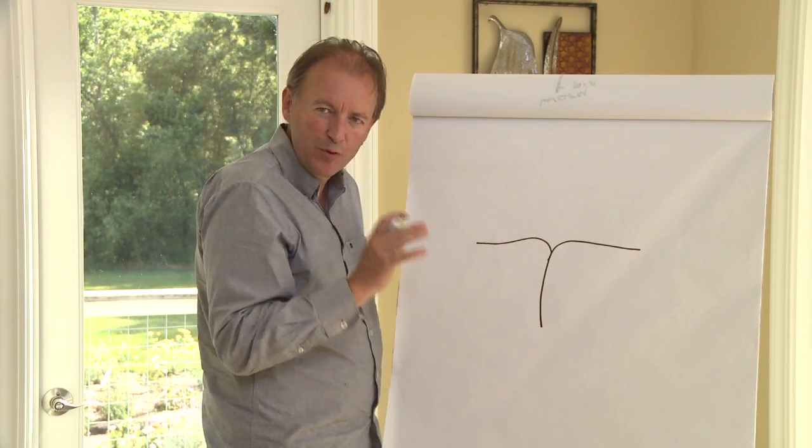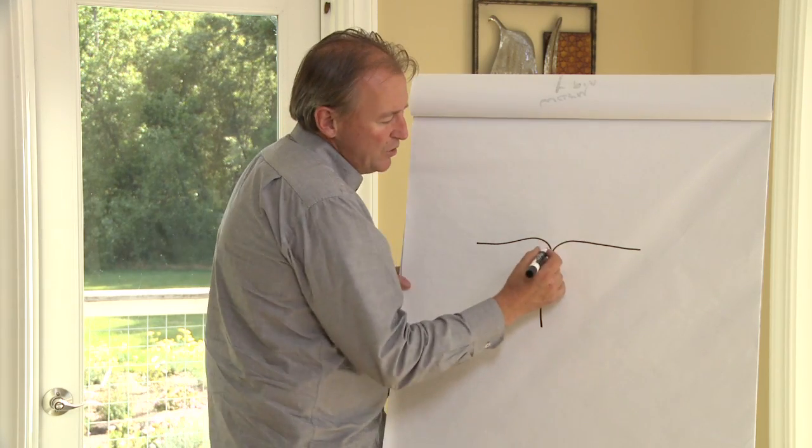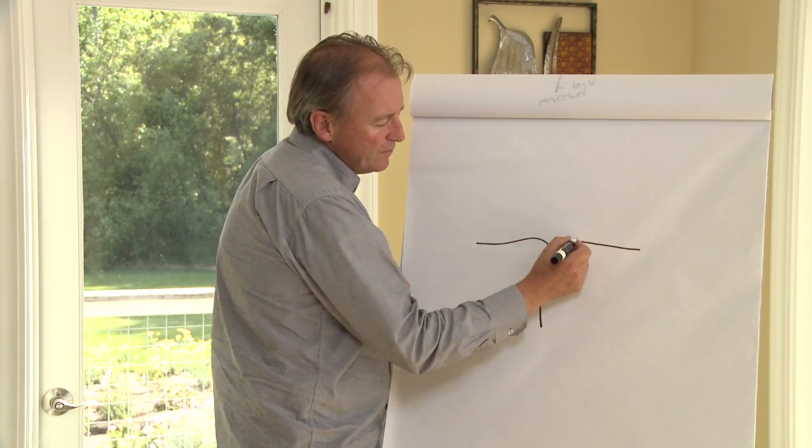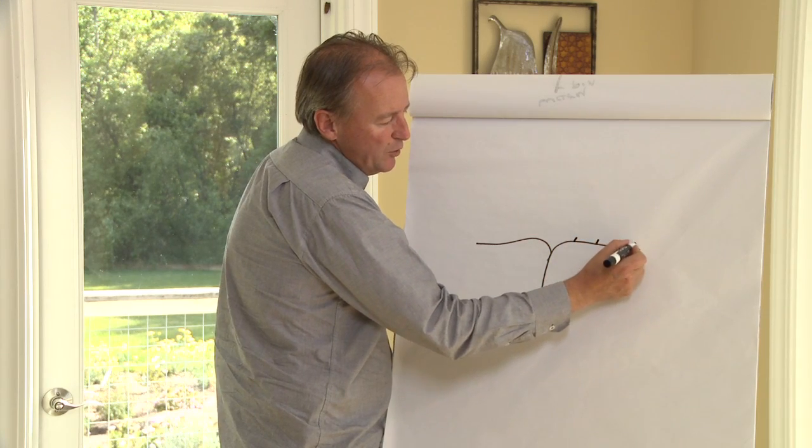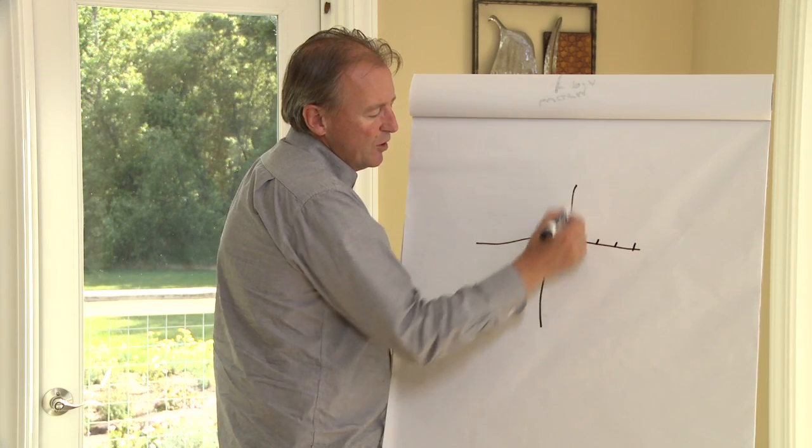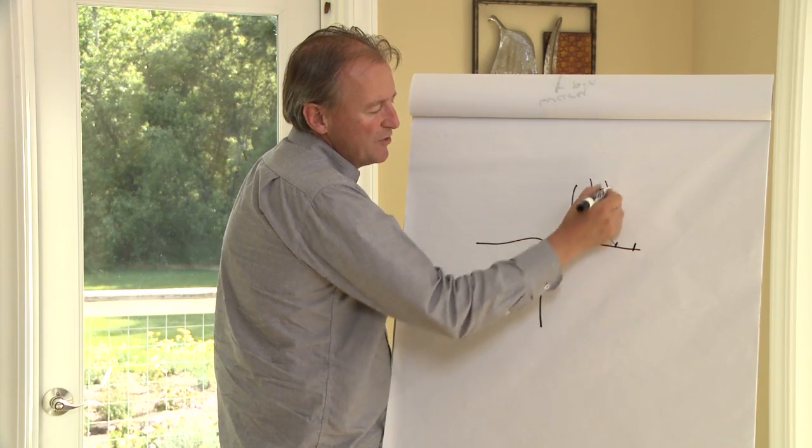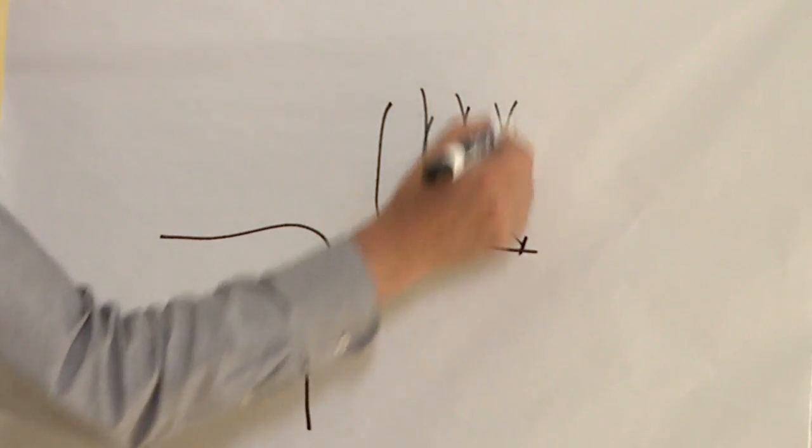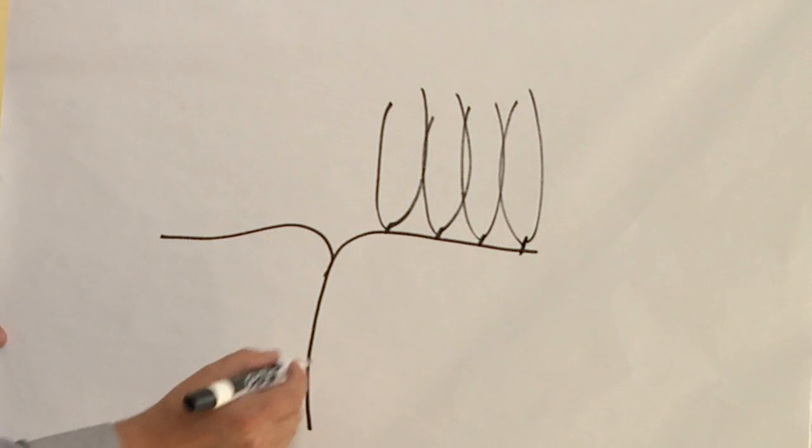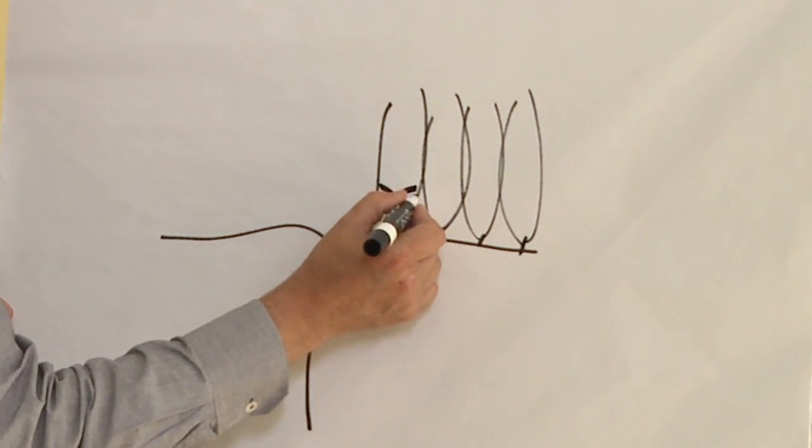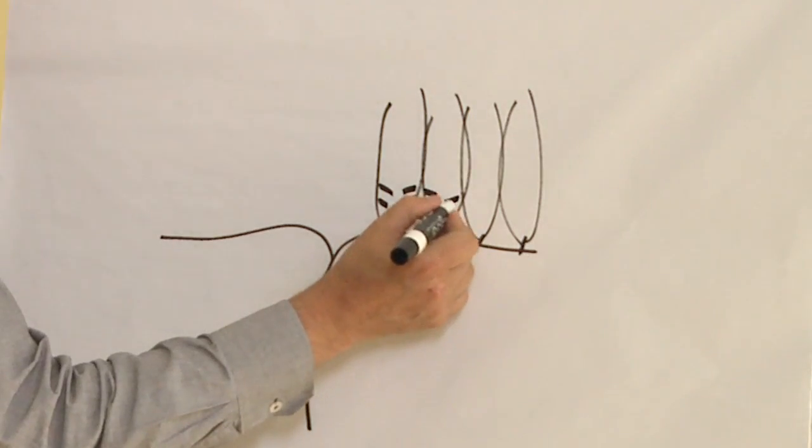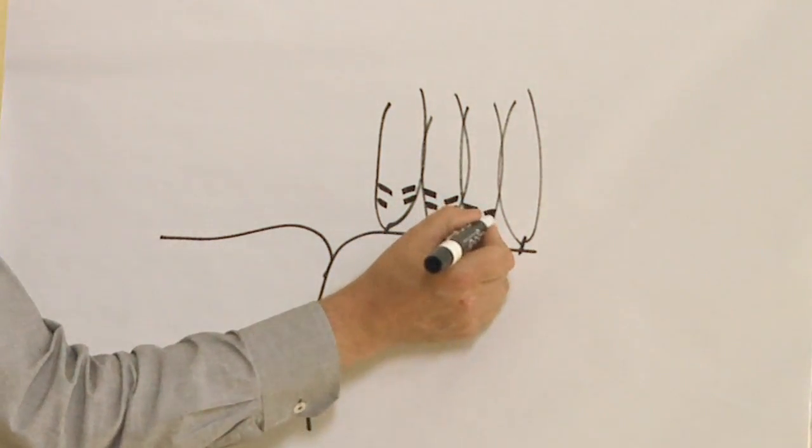So if we look at a spur pruned vineyard, what we do is we lay two arms out over many years. We have these what we call two-bud spurs and each one of these spurs will produce two shoots because we leave two buds on it. And these buds grow into the shoots that we'll get for this year. And on those shoots we'll have two clusters. Two clusters form on each shoot and you can imagine that as this vine grows, this becomes very congested.